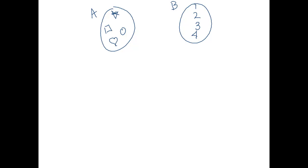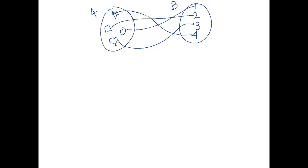How can we determine that they have the same size? You can look at it and say A has four things in it and B has four things in it, but that's not very precise. What we want to be able to say is that we can pair every element from A to an element from B. If we can do that and there aren't any elements left over, then clearly they have the same size. For example, if we pair star with 4, square with 2, circle with 1, and heart with 3, then we've paired every element from A to B and every element from B to A. So yes, they have the same size.